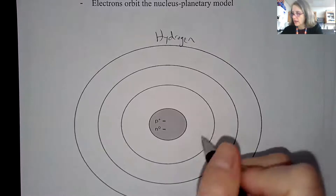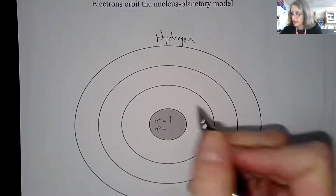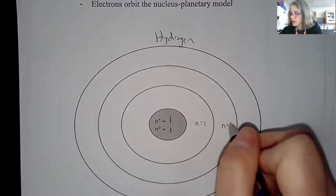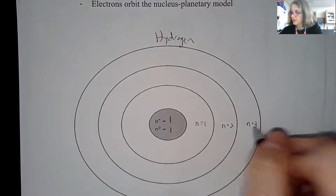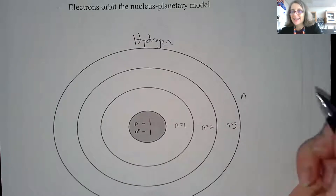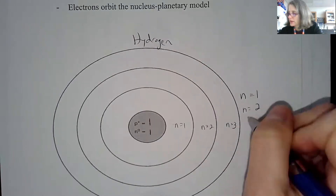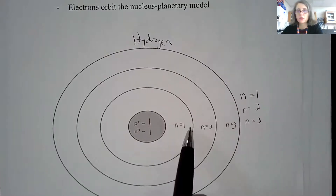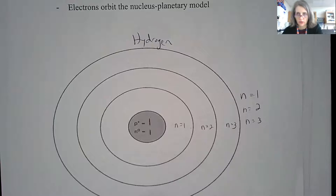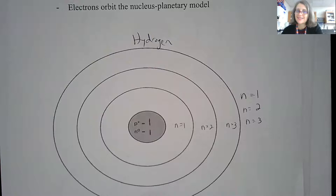This is the nucleus. I know I have one proton and let's say it has one neutron. This is energy level one, energy level two, energy level three. Energy levels are labeled N, and smaller numbers are always ones closer to the nucleus. So energy level one is close to the nucleus, energy level two, energy level three, so on and so forth.